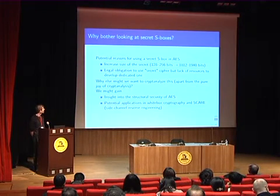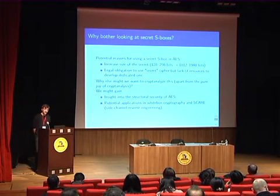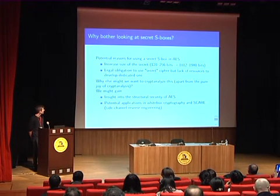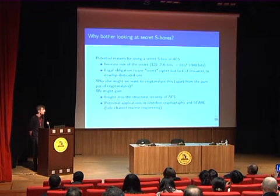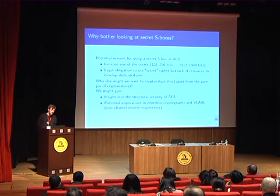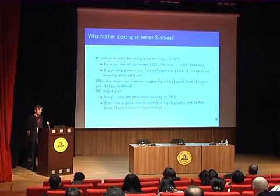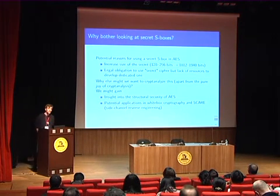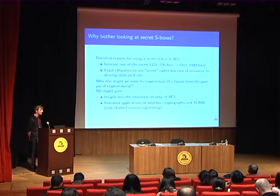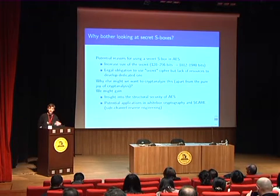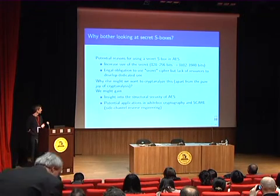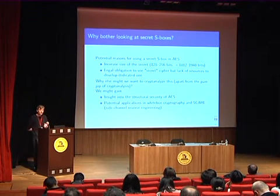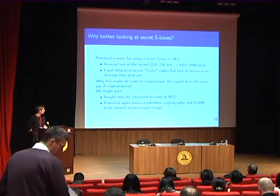So why would anybody bother looking at AES with the secret SBOX? There are two reasons for application. First, we might consider increasing the size of the secret to increase the security of the cipher. By using the secret SBOX, we increase the size of the secret by more than 1,500 bits. Another reason might be that we are legally obliged to use a secret cipher — perhaps in a top secret setting or for some certification — but lack the resources to develop our own cipher. There are also theoretical reasons: the main one being to get insight into the structural security of AES — what remains when we strip away knowledge of the SBOX. We also hope that the techniques we are using might have applications in white-box cryptography and in side-channel attacks.